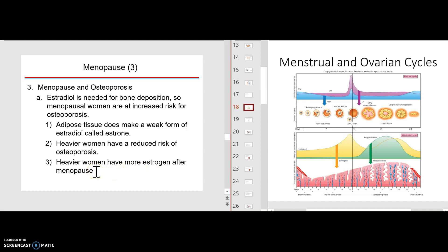And heavier women have more estrogen after menopause. Why is that? Because if the heaviness is due to fat tissue with the aromatase enzyme, then that would convert testosterone to the estrogens.